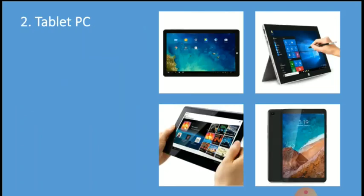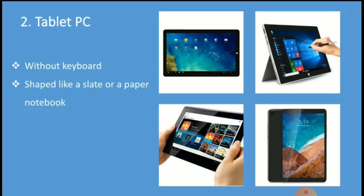The next one is the Tablet PC. A keyboard is not attached to the tablet PC. It looks like a slate or a paper notebook and has features of a touch screen with writing ability and handwriting recognition software. Tablets may not be best suited for applications requiring a physical keyboard for typing, but are otherwise capable of carrying out most tasks that an ordinary laptop would be able to perform.